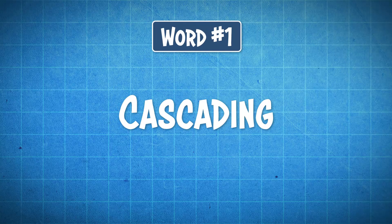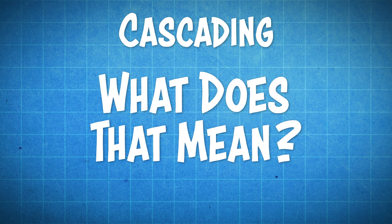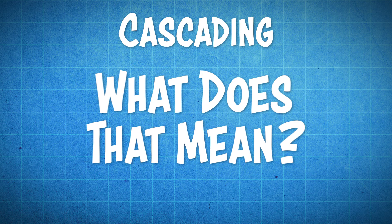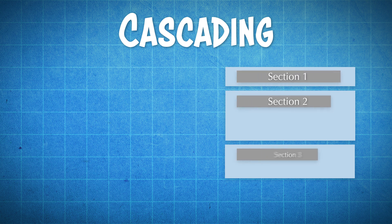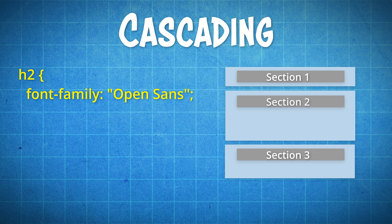Now the first word of CSS is cascading. So what does that mean? Let's keep it simple and say that you have a website that's made up of three different sections, and in each of these sections is some heading text. Let's say that you want to assign all of these texts with a class of Heading 2, aka H2, and you want them to be Open Sans font. You can write a bit of code that will change all of them at once throughout the entire website. This is why it's called cascading.